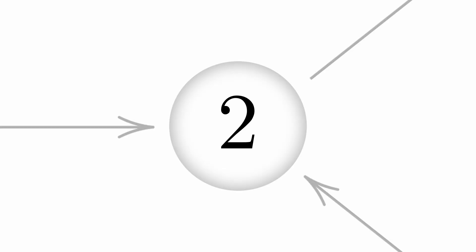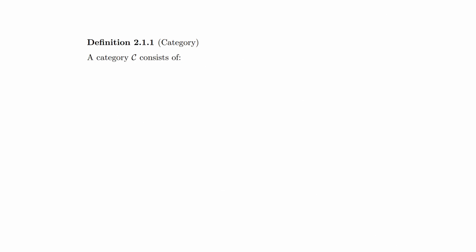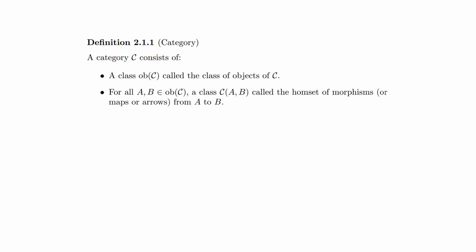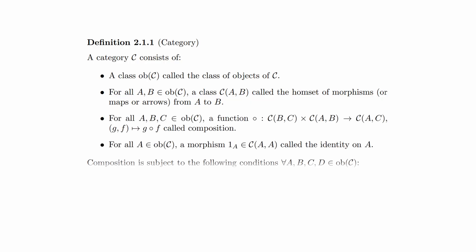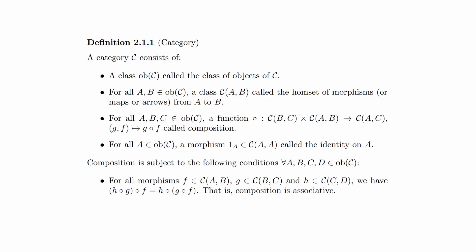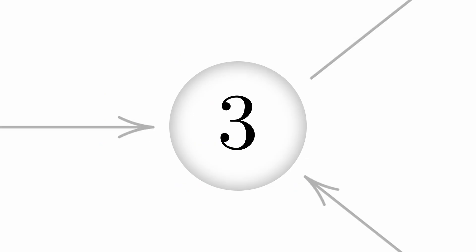Fact 2: A category consists of a collection of objects, for any two objects a hom-set of morphisms from one to the other, and a composition operation, such that composition is associative and has identities for each object. Easy right? Fact 3: Not easy.